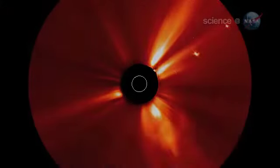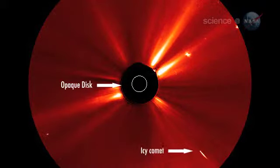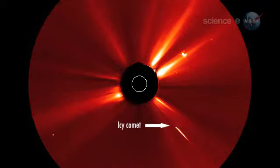And now, the solar system has one less dirty snowball. The Solar and Heliospheric Observatory saw it first, using an opaque disk to block the Sun's glare.